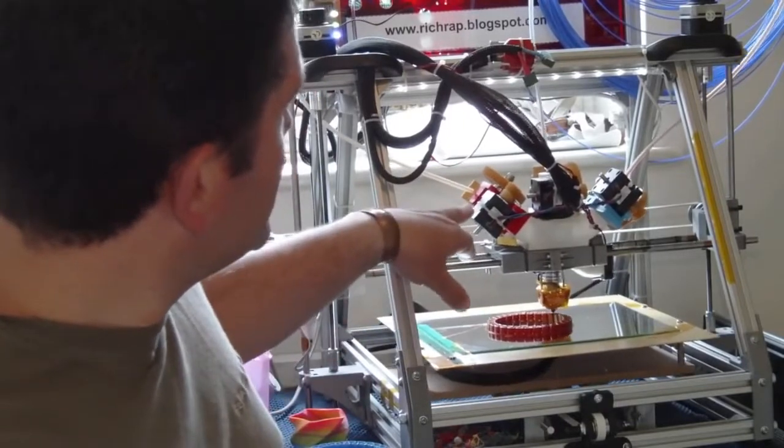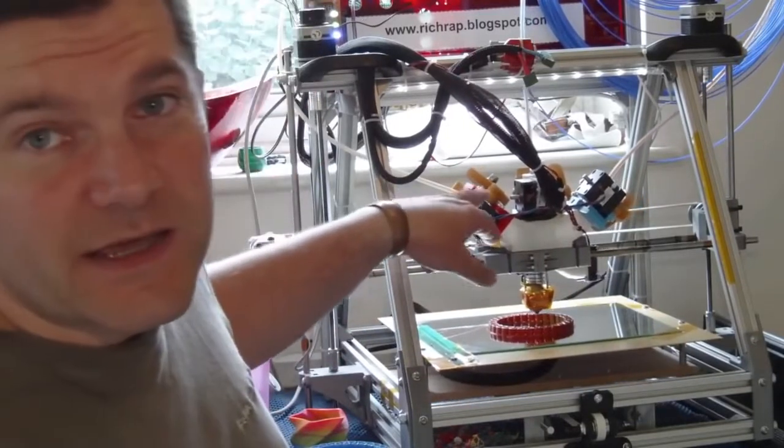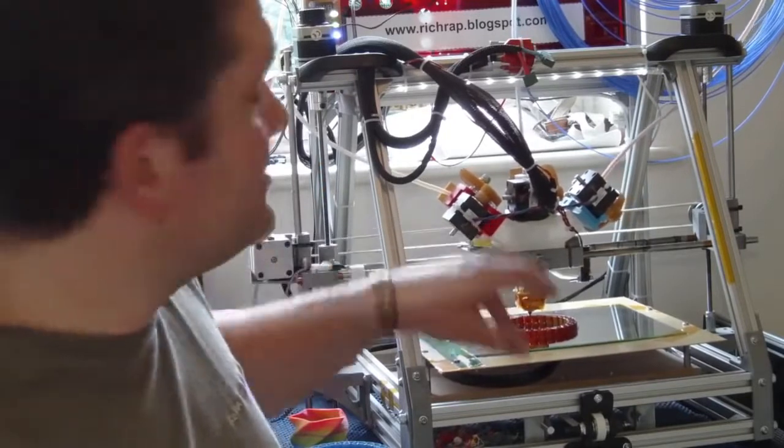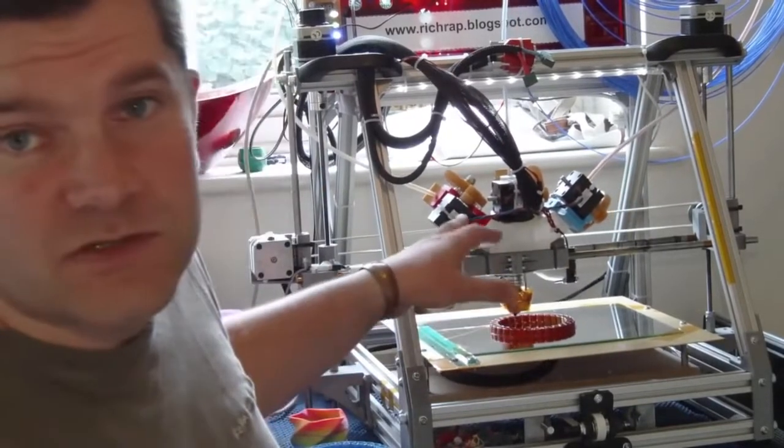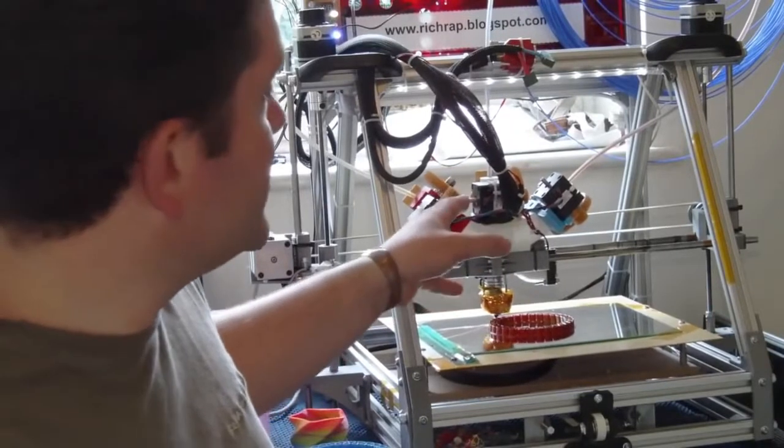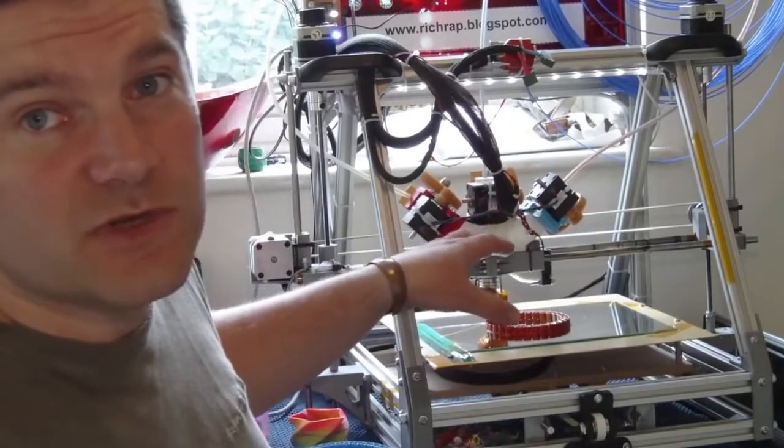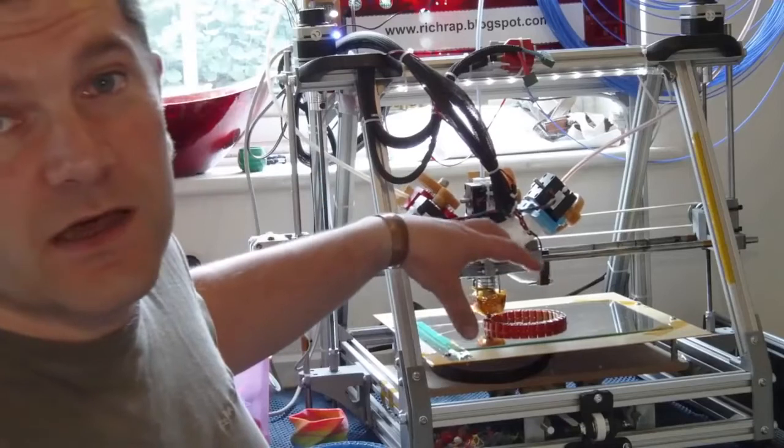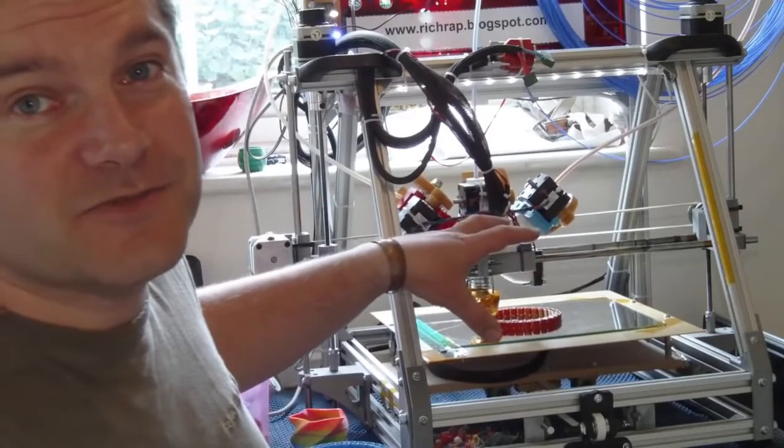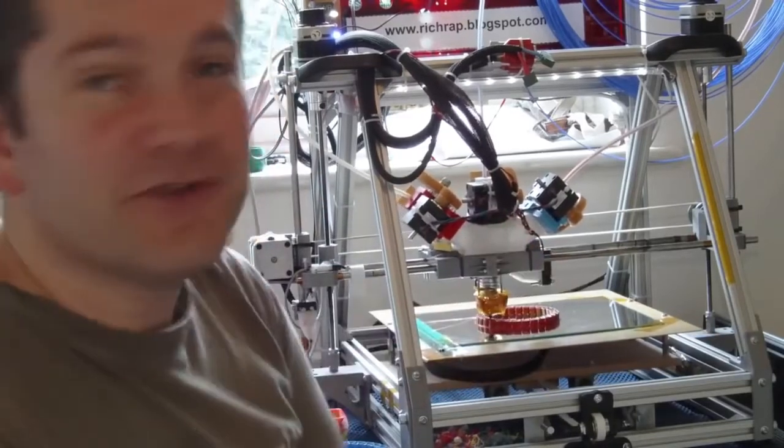At the moment it's printing a little stretchlet bracelet. You can obviously use different materials as well. I've got all three extruders enabled on this one to give a really nice color effect which I'll show you in a second.